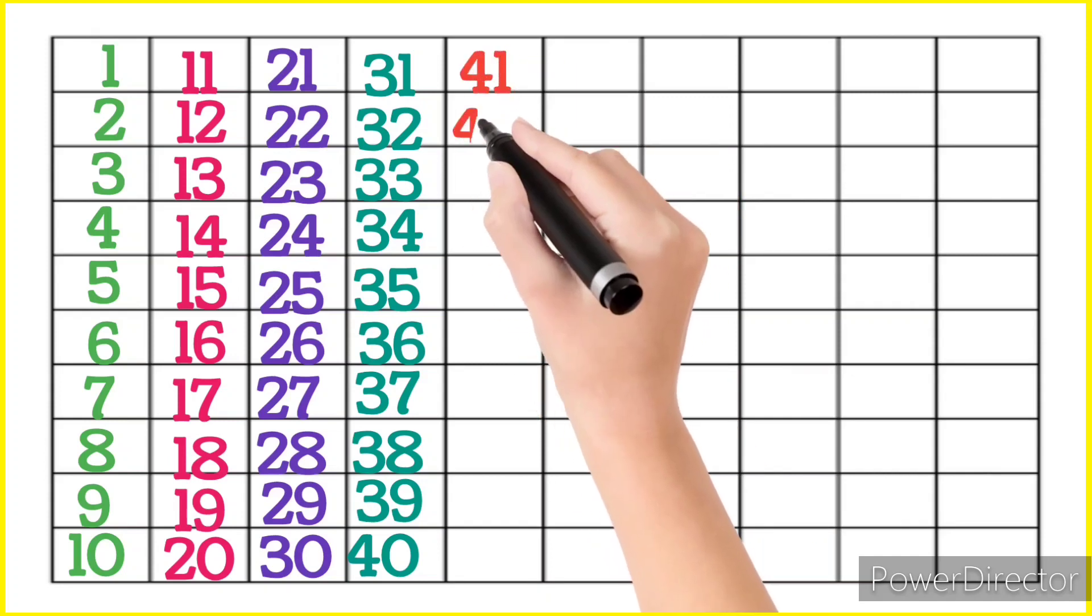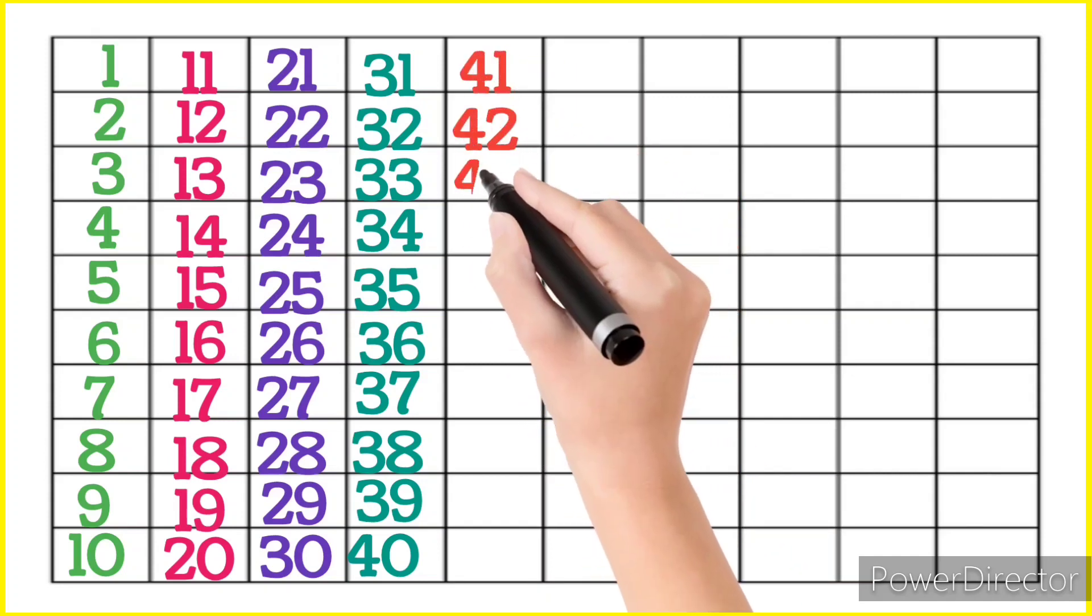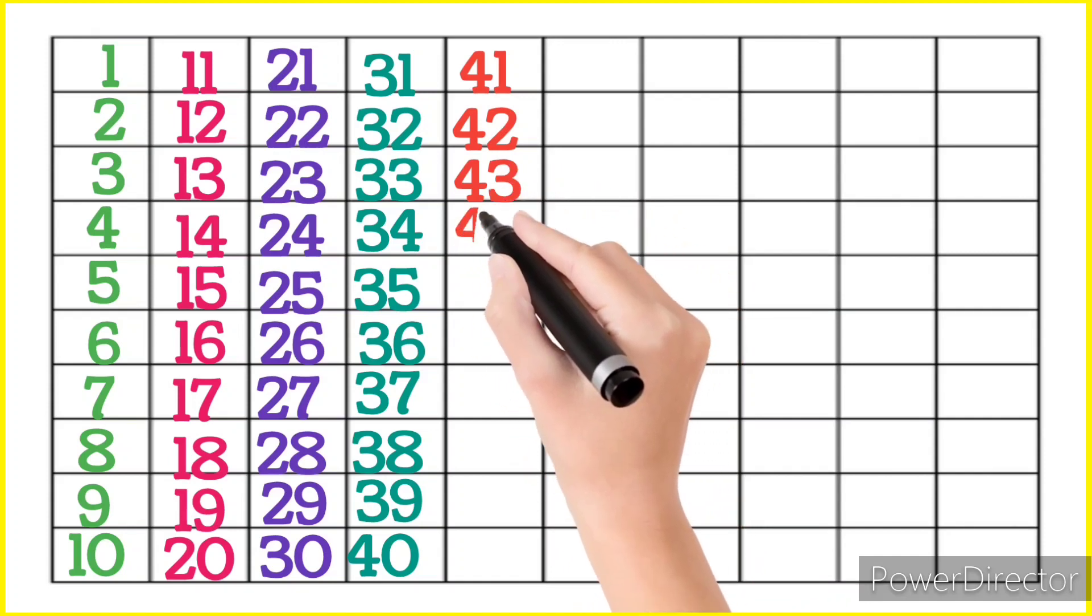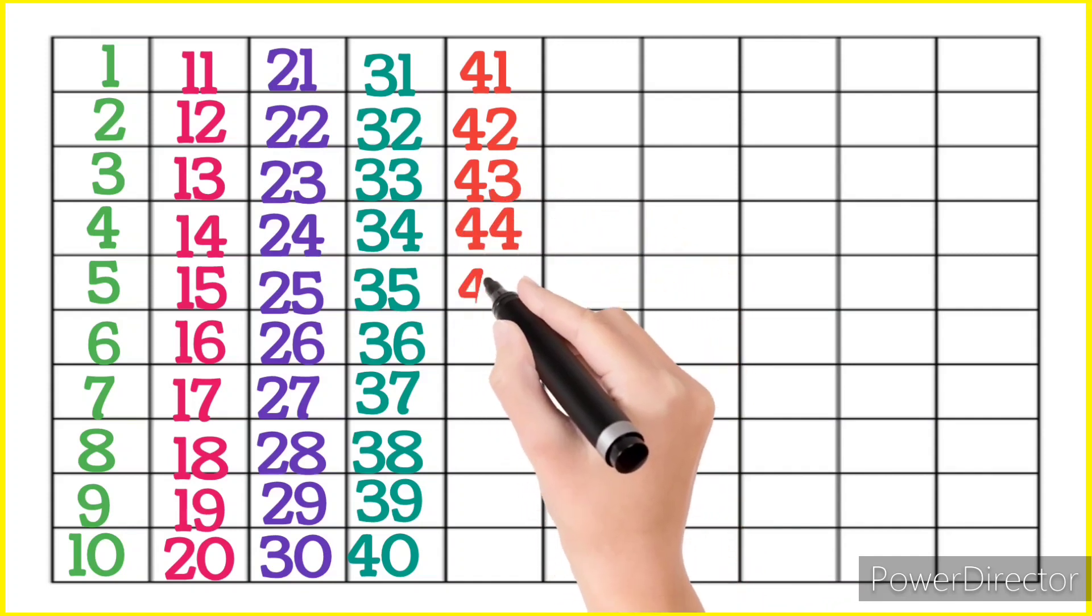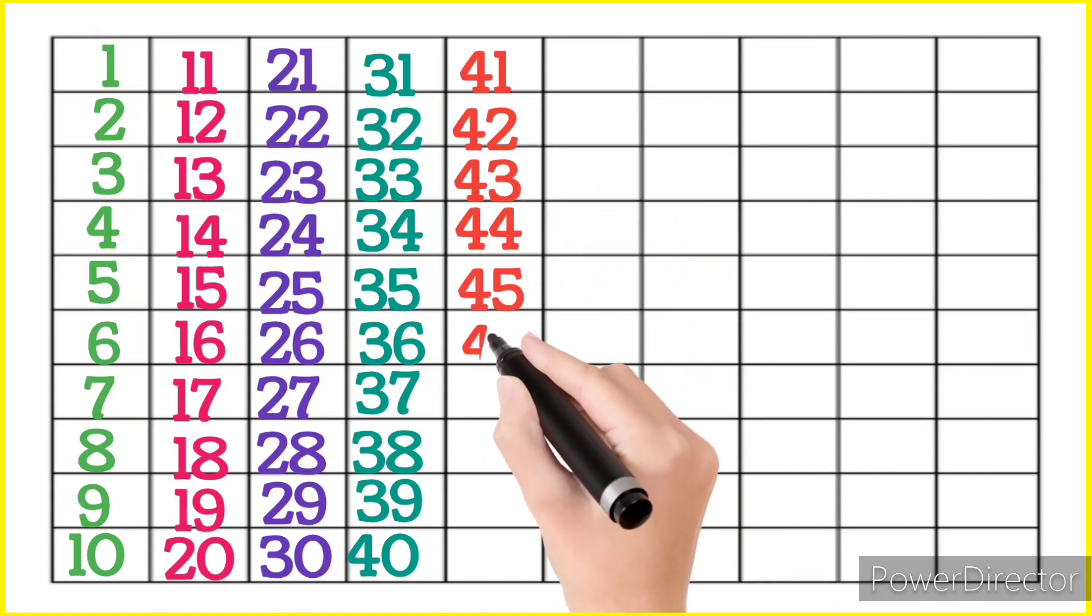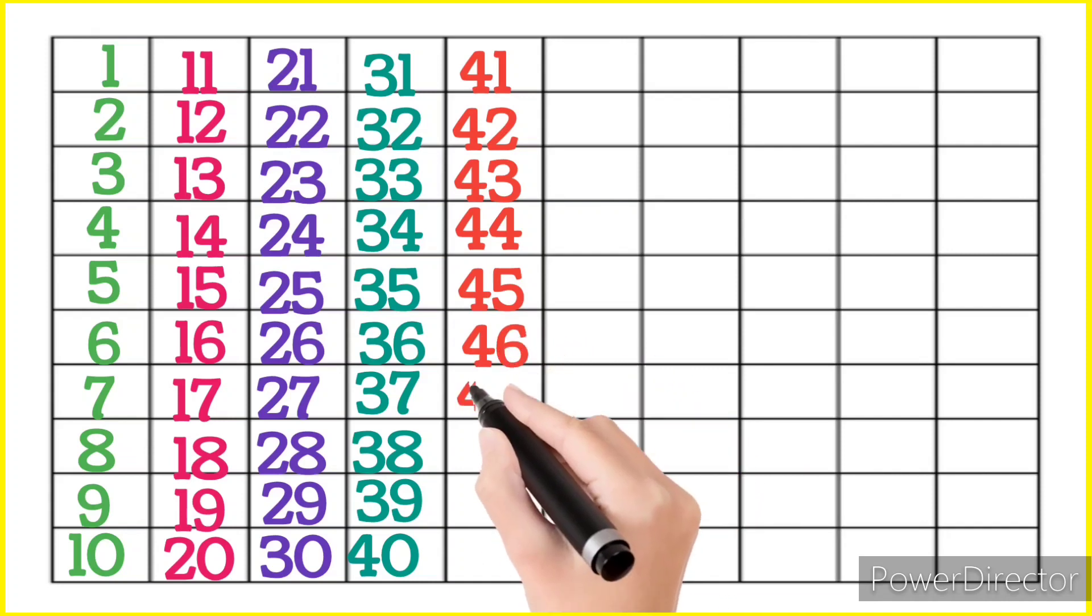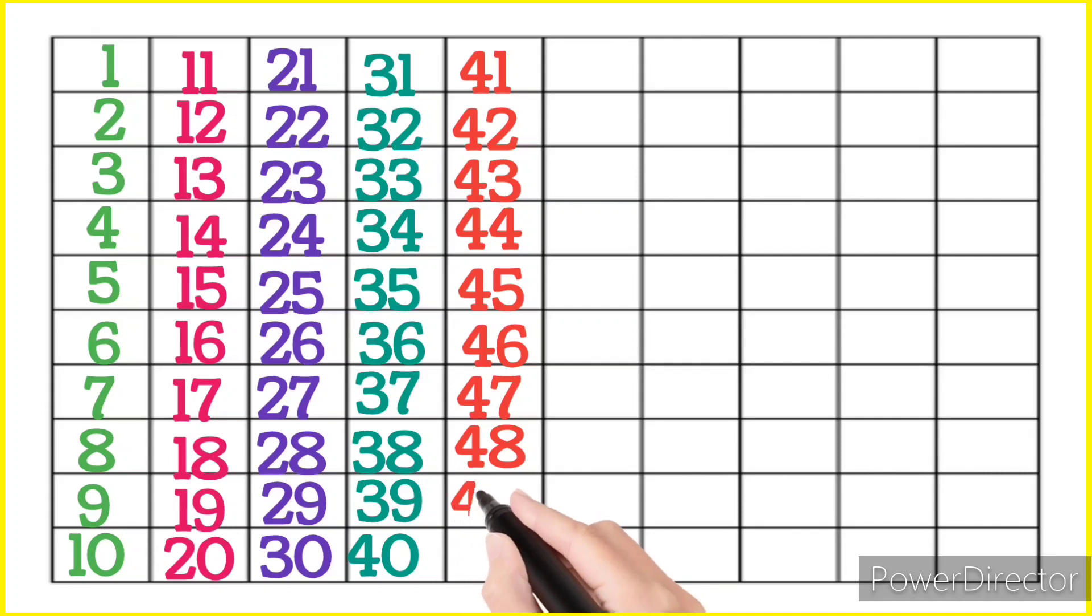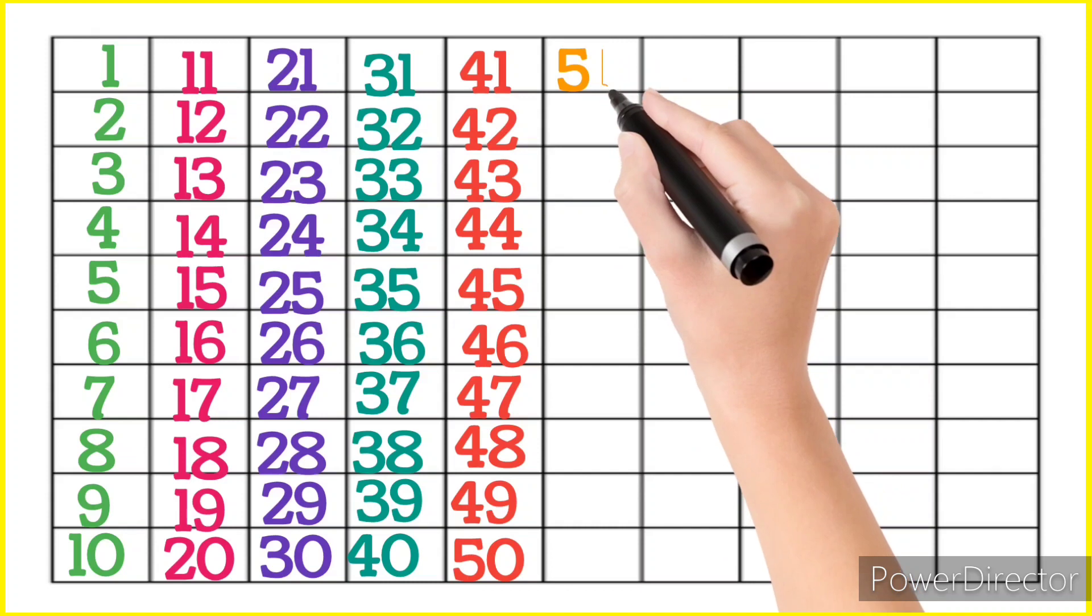4, 1, 41, 4, 2, 42, 4, 3, 43, 4, 4, 44, 4, 5, 45, 4, 6, 46, 4, 7, 47, 4, 8, 48, 4, 9, 49, 5, 0, 50, 5